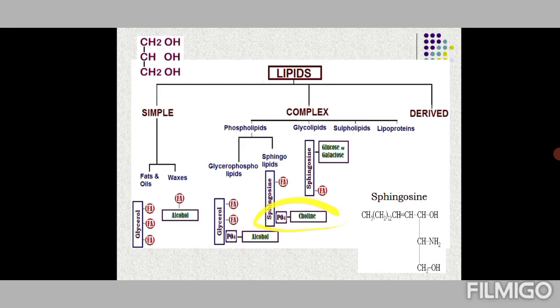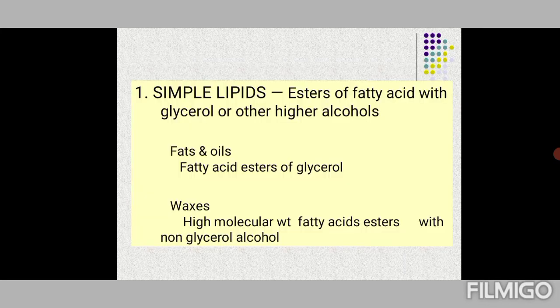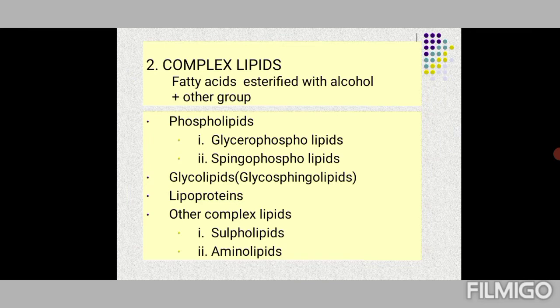Glycolipids have sphingosine as the basic alcohol with glucose, galactose, or an oligosaccharide attached, along with a fatty acid. We will study the details of these complex lipids as we proceed with lipid chemistry. That covers simple lipids and complex lipids.